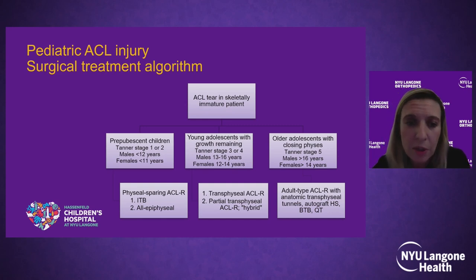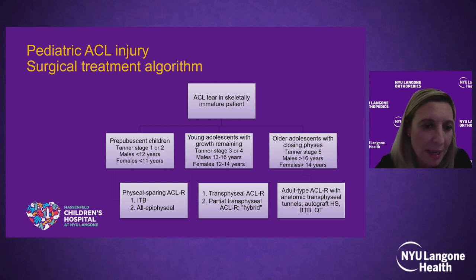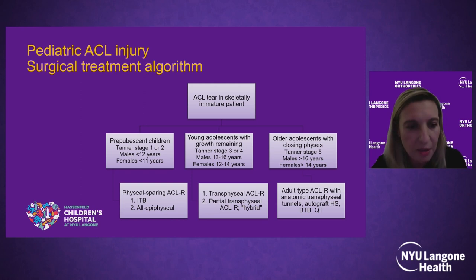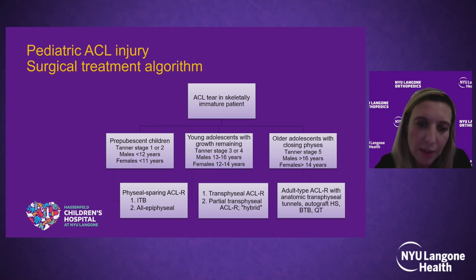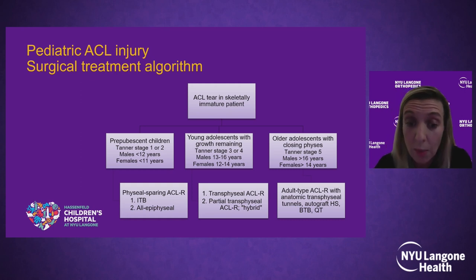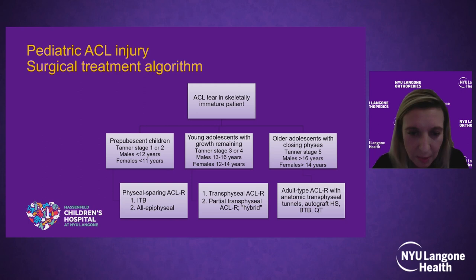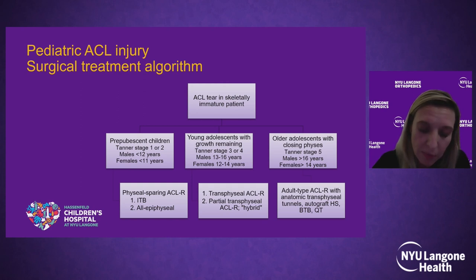There is a generally accepted treatment algorithm for ACL tears in skeletally immature patients. On the left are prepubescent kids — Tanner stage 1 or 2, males under 12, females under 11 — who get a physeal-sparing ACL reconstruction. In the middle are young adolescents with growth remaining — Tanner stage 3 to 4, males 13–16, females 12–14 — who typically get a transphyseal reconstruction, possibly with physeal-sparing modifications or a hybrid partial transphyseal tibial and epiphyseal femoral approach. On the right are older adolescents with closing physes — Tanner stage 5 — who can have an adult-type ACL reconstruction with anatomic tunnels using autograft: hamstring, BTB, or quad tendon.